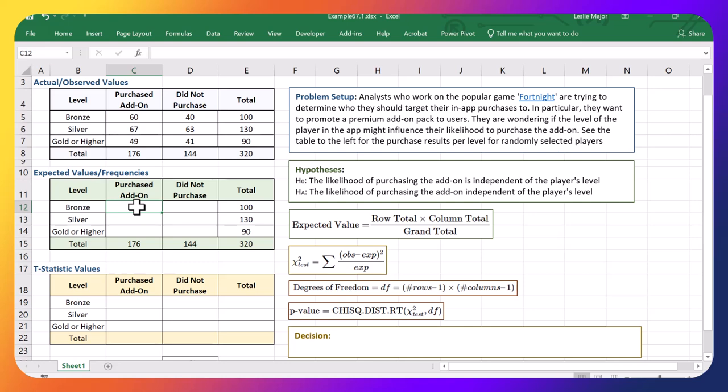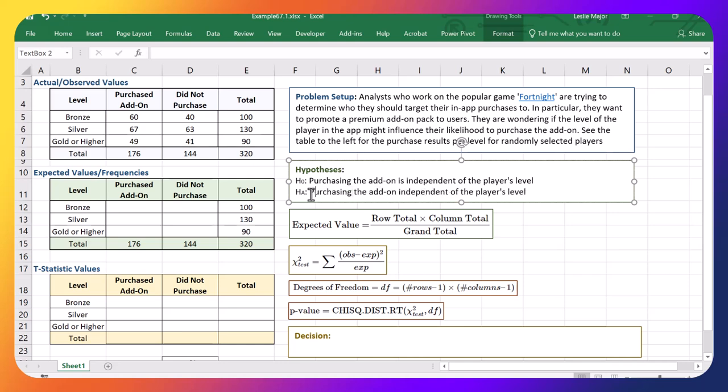First thing I'm going to do is to define my null and alternative hypotheses. They're here listed already. Look in the video description for the link to where to download this Excel file. So our null hypothesis, we're going to set it as the following: purchasing the add-on pack is independent of the player's level. Our alternative hypothesis is that purchasing the add-on is dependent on the player's level. So we have independent for H naught, dependent for H A.